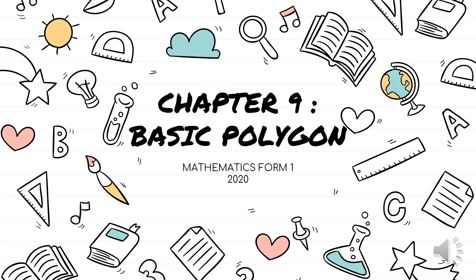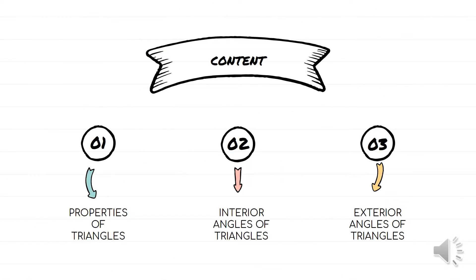Assalamualaikum. Today we're going to look into chapter 9, Basic Polygon. We are specifically going to look at triangles — properties of triangles, interior angles of triangles, and exterior angles of triangles.